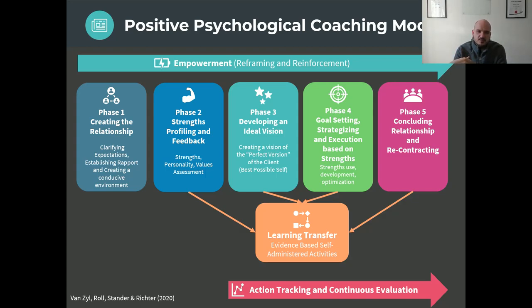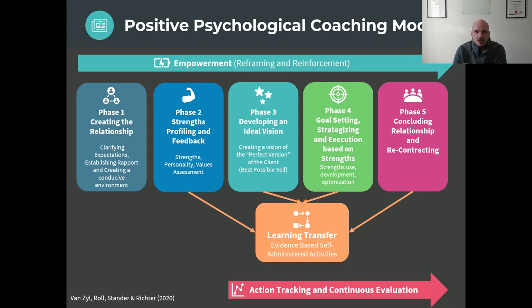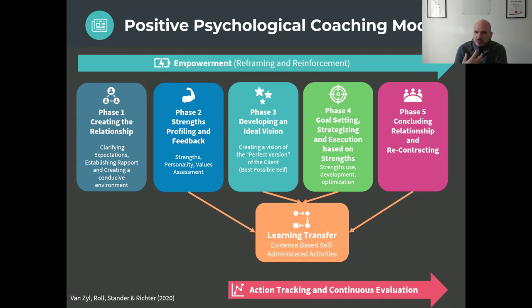These five phases are supported by three continuous processes. The first is empowerment — really helping a client reframe negative things from a positive perspective, reinforcing positive behaviors and helping break down negative experiences. The coach tries to help the person become more aware of the strength process, but also helps change their mindset from a victim to a survivor mentality.